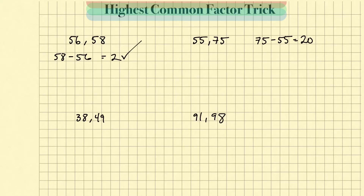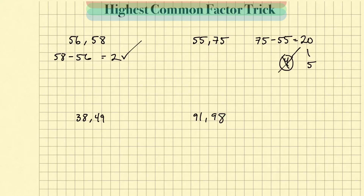Then we're going to see if 20 goes into either one of these numbers. You can see that 75 can't be divided by 20, and 55 can't either. So we have to break down 20 into its factors — let's go with 4 and 5. The number 4 does not go into 75 or 55, but the number 5 does. So we're going to say that 5 is the greatest common factor.